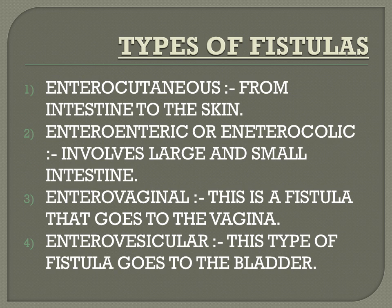We are describing anal fistulas specifically. Other types of fistulas include enterocutaneous — from the intestine to the skin; enteroenteric or enterocolic — involving the large and small intestine; enterovaginal — a fistula that goes to the vagina; and enterovesical — a fistula that goes to the bladder.